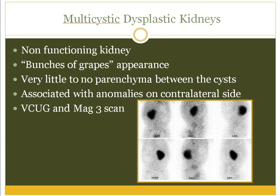Why does it happen? It may be the consequence of either an intrinsic — a malformation — or an extrinsic disruption defect in organogenesis. An intrinsic defect is either a single gene mutation, a chromosomal aberration, or a multifactorial combination of genetic and environmental factors. When extrinsic, it could be due to teratogenic chemicals exposed during pregnancy, metabolic abnormalities, or infection.